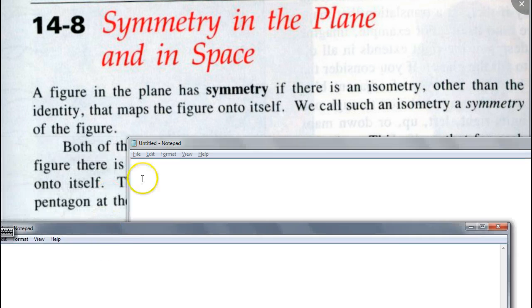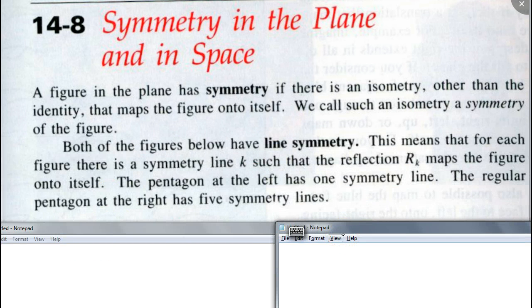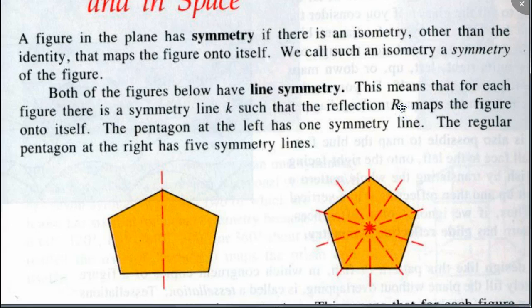Take a look at this here. Both of the figures will have line symmetry. This means that for each figure there is a symmetry line k such that the reflection rk maps the figure onto itself. The pentagon on the left has one symmetry line, and the pentagon on the right has more. You can see how these lines — line of symmetry — when you reflect it, will map onto yourself. That's what a symmetry is.